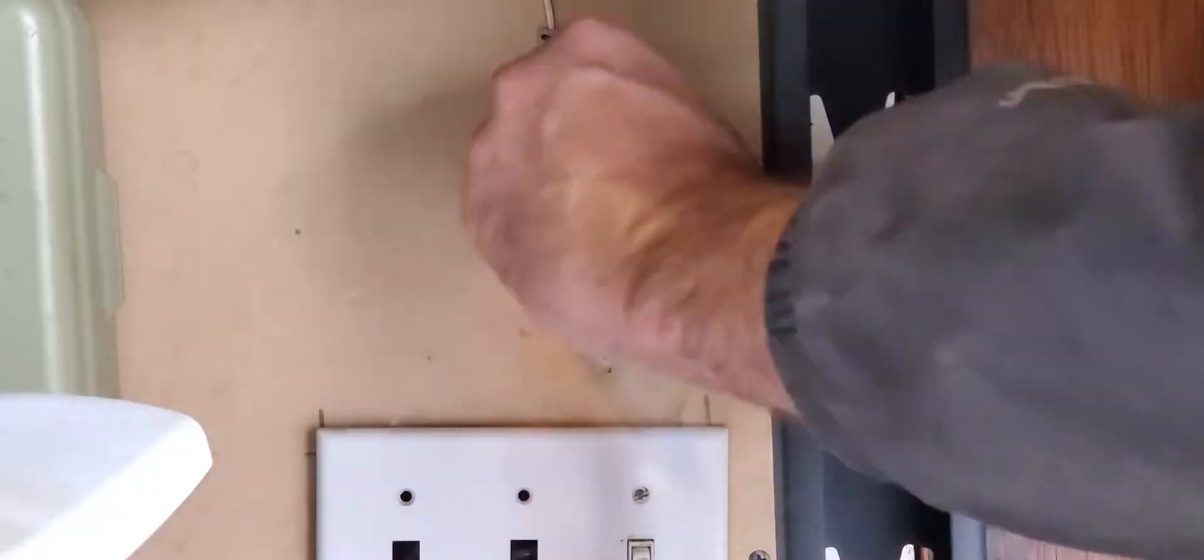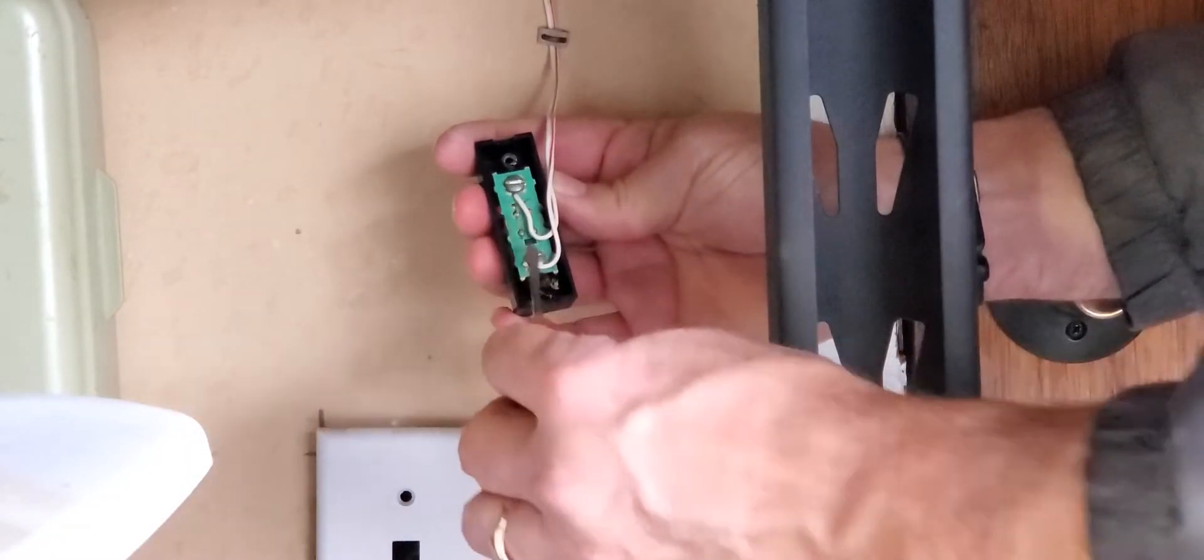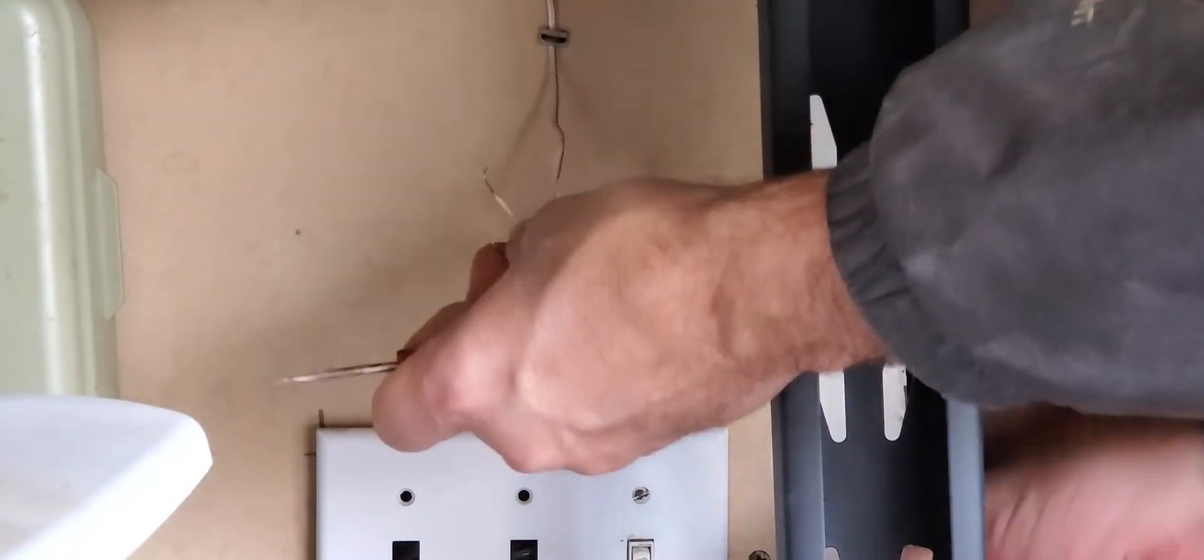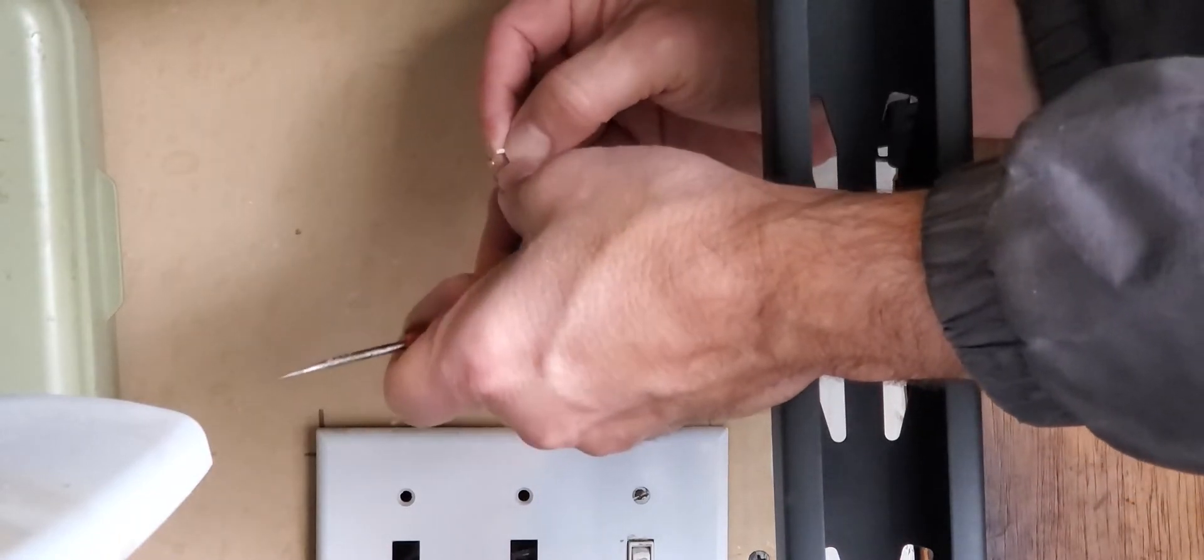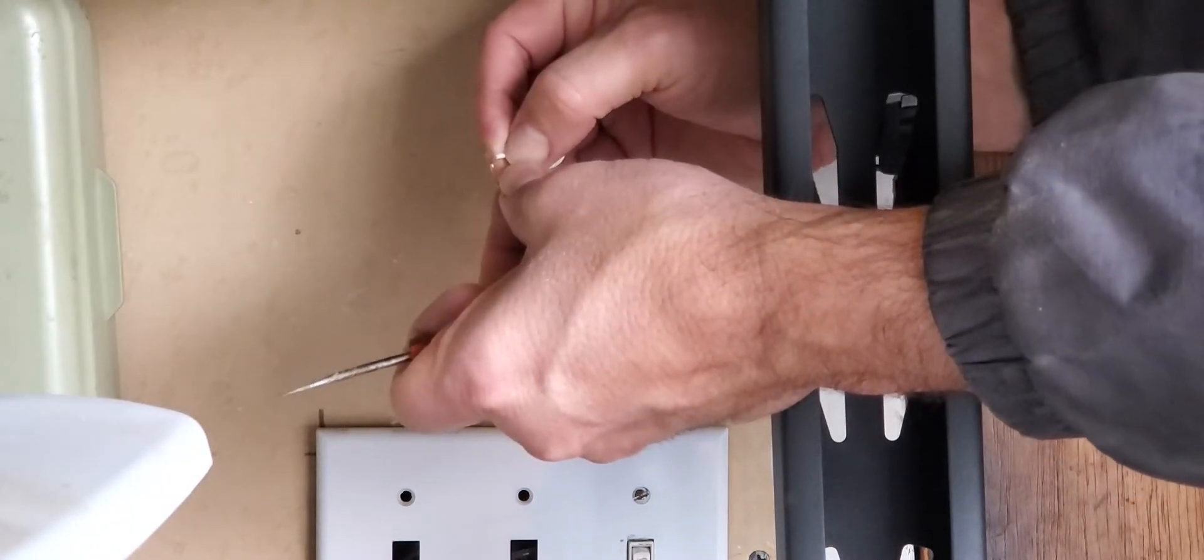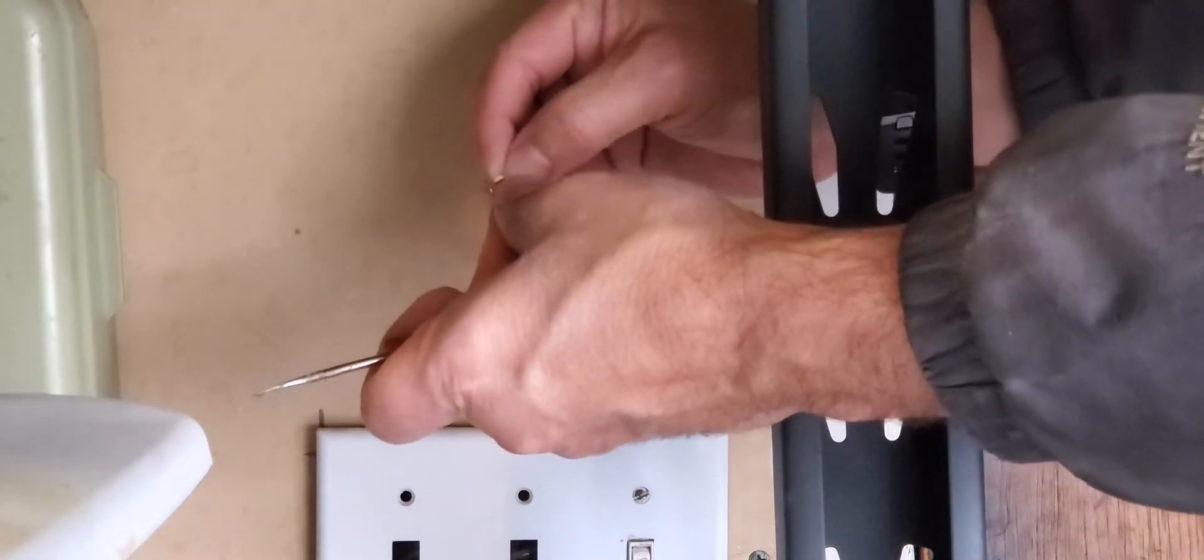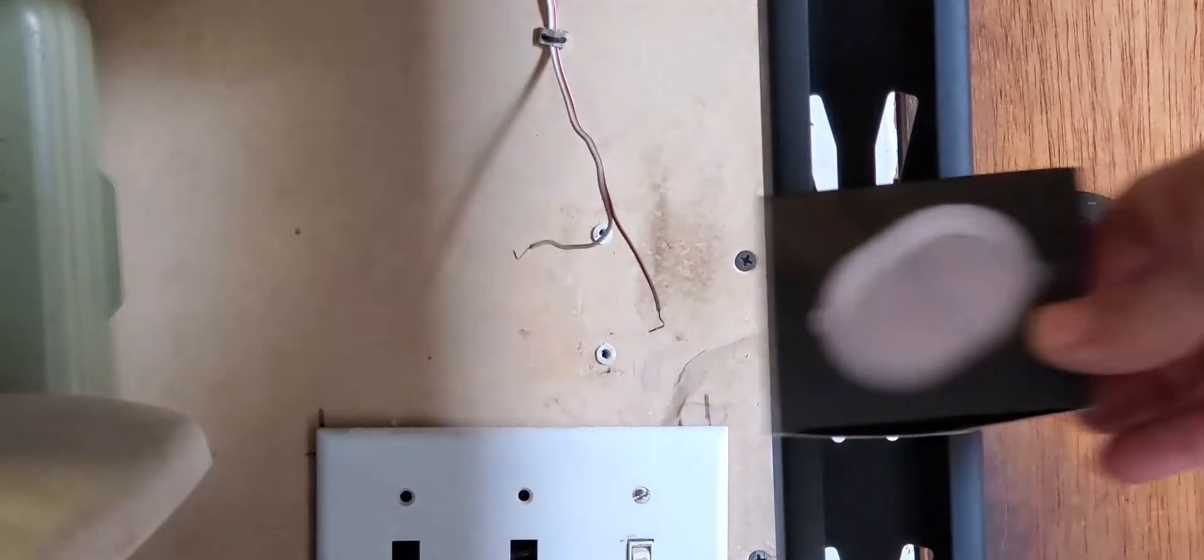First we'll start by taking the button off the wall. Now you see there's two screws here holding the wires on. We're going to remove those screws as well so we can free those two wires. Once those wires are free you can touch them together and if the garage door responds by opening or closing when you touch those two wires together this is a simple switch based garage door opener.